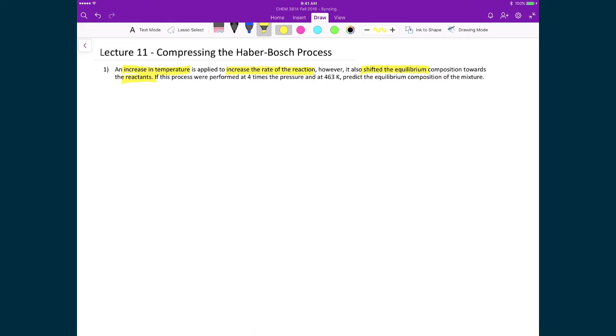And so what we're going to explore now is the effect of pressure changes on the equilibrium. We're going to calculate at 4 times the pressure, still at 463 Kelvin.